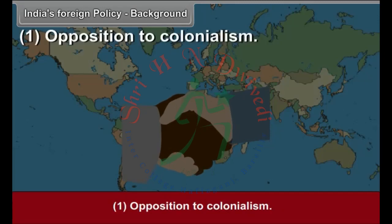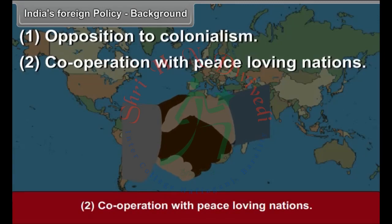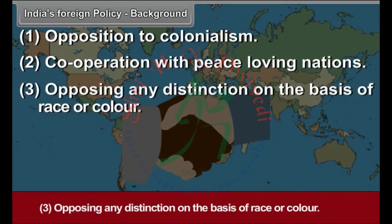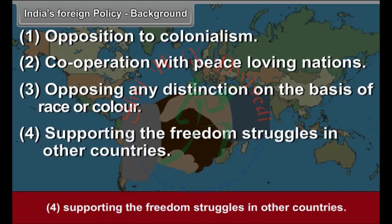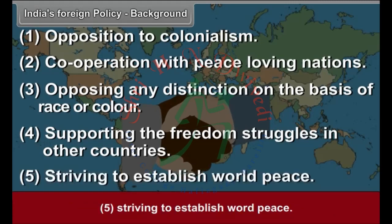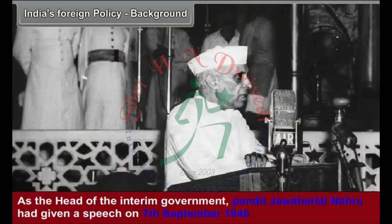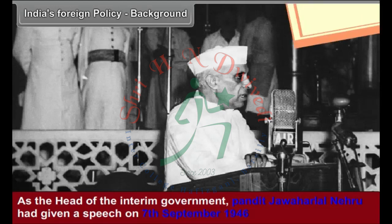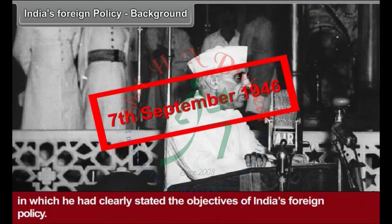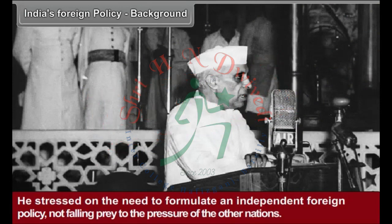1. Opposition to Colonialism. 2. Cooperation with peace-loving nations. 3. Opposing any distinction on the basis of race or colour. 4. Supporting the freedom struggles in other countries. 5. Striving to establish world peace. As the head of the interim government, Pandit Jawaharlal Nehru gave a speech on 7th September 1946, in which he clearly stated the objectives of India's foreign policy. He stressed on the need to formulate an independent foreign policy, not falling prey to the pressures of other nations.